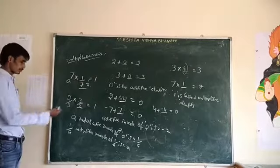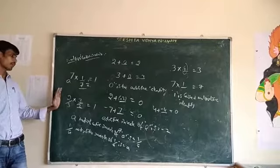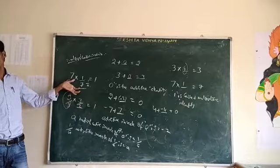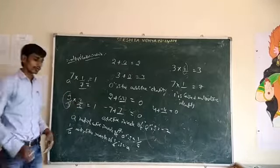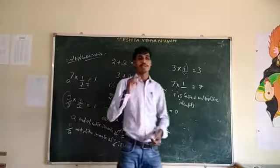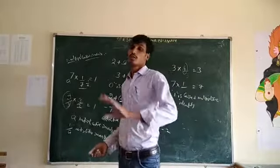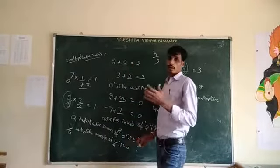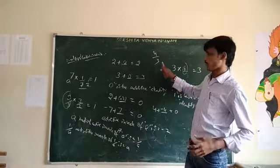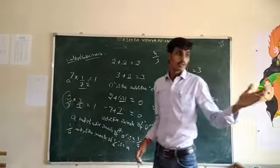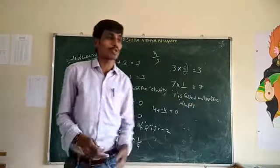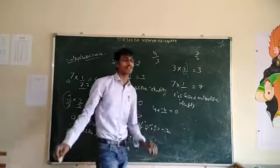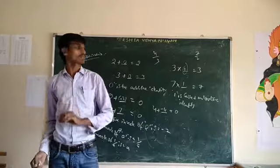Taking a equal to 2 by 3, the value of 1 by a means the reciprocal of 2 by 3, which is 3 by 2. So the multiplicative inverse of 3 by 4 is 4 by 3, and the multiplicative inverse of 2 by 7 is 7 by 2. These are the properties of rational numbers.